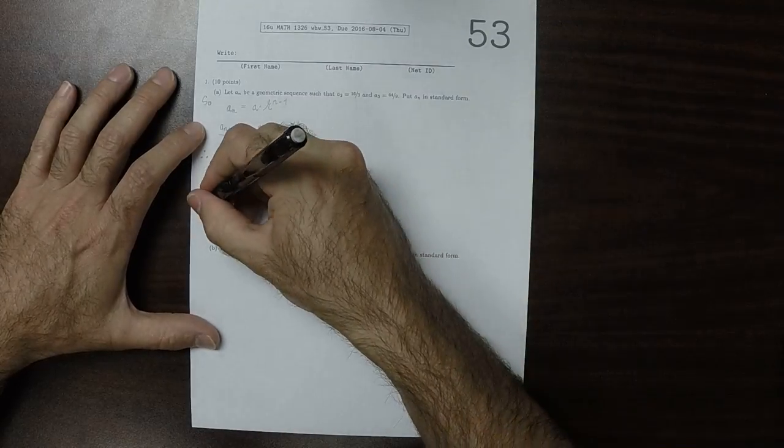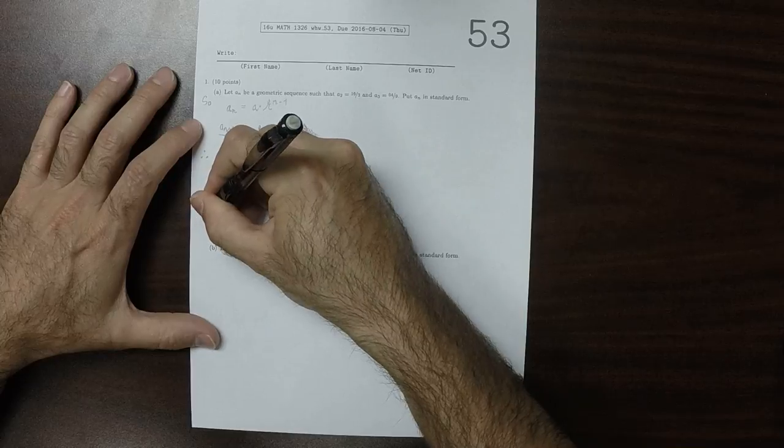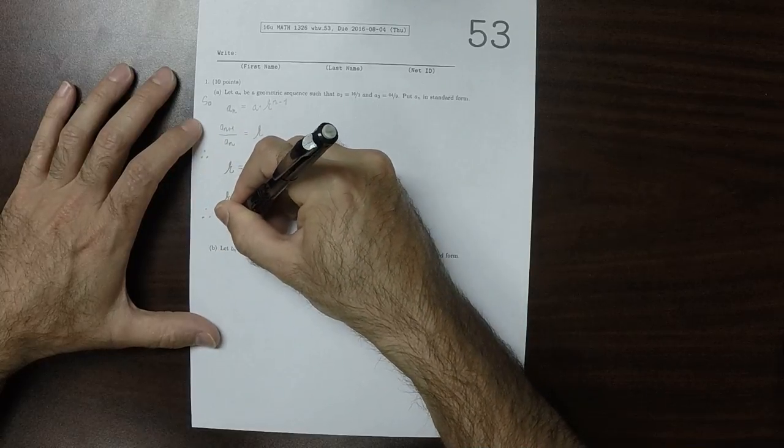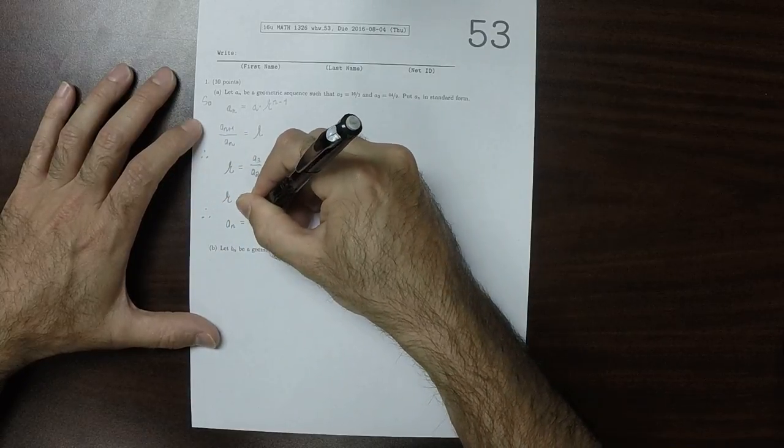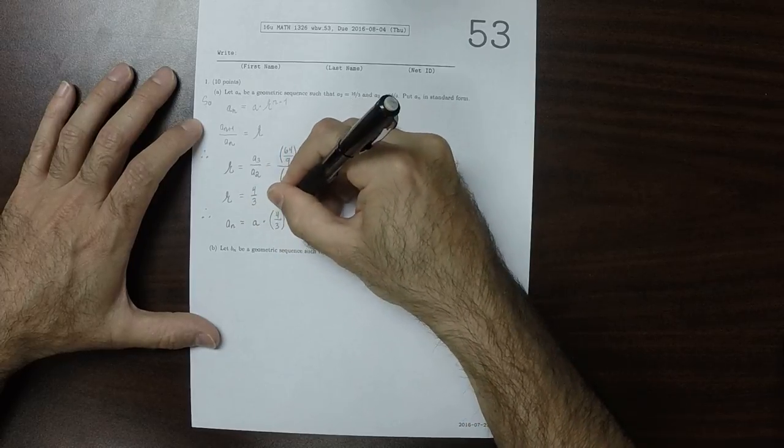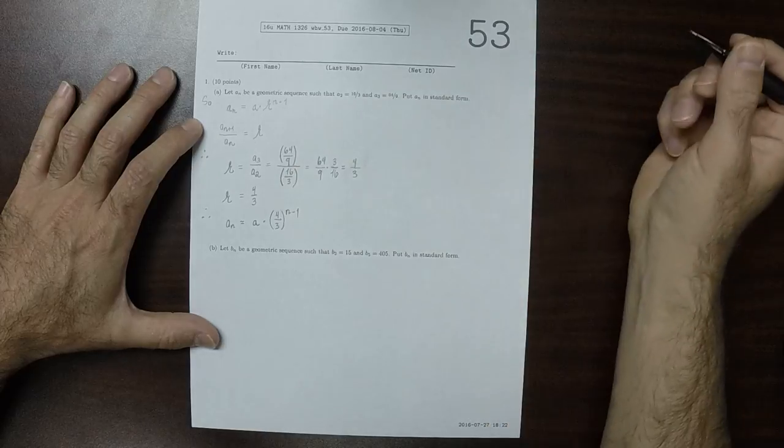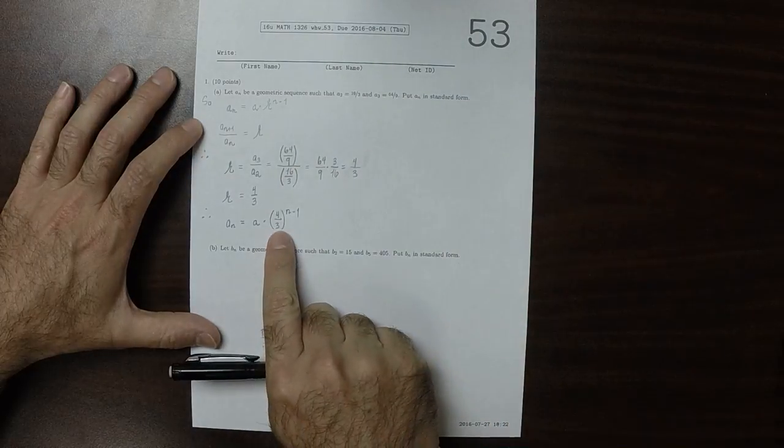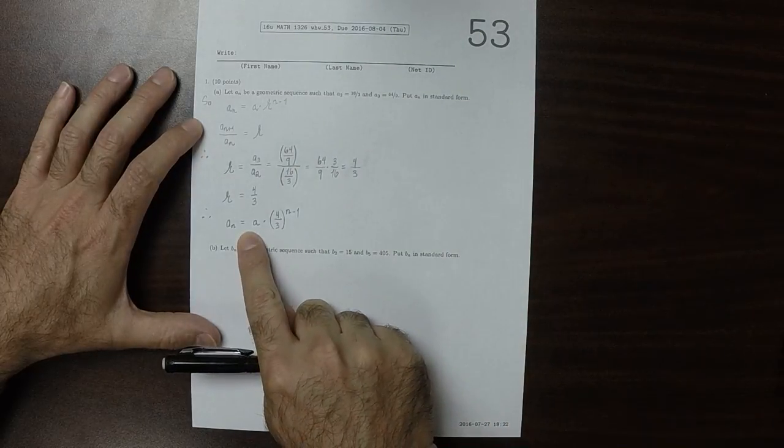So what we know is that a_n is some a multiplied by 4 thirds to the power of n minus 1. We determined r, but we have yet to determine a.